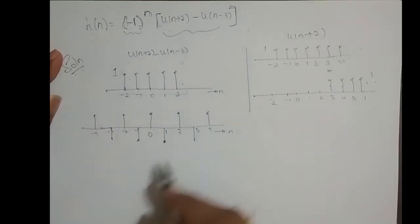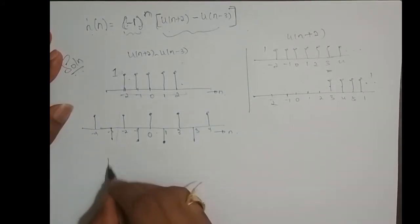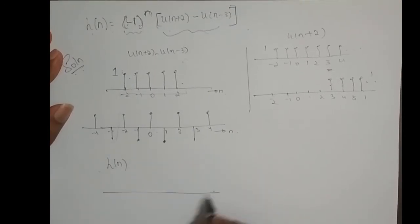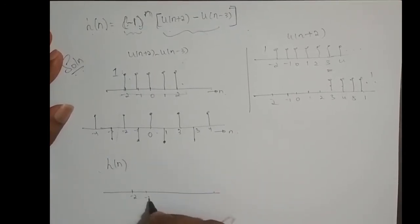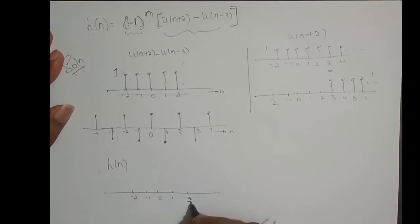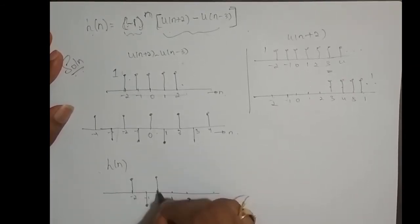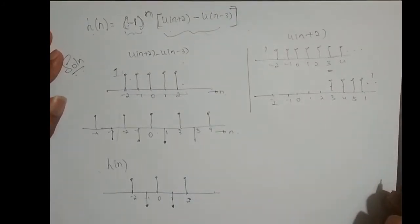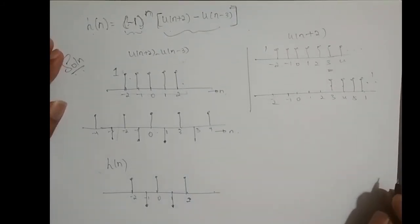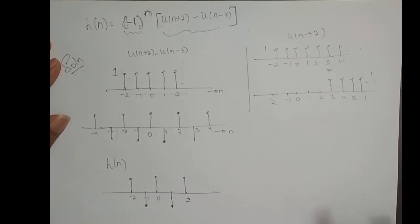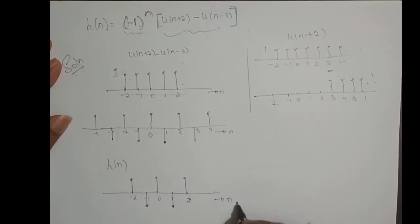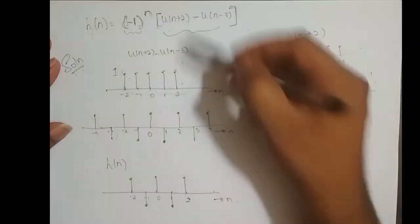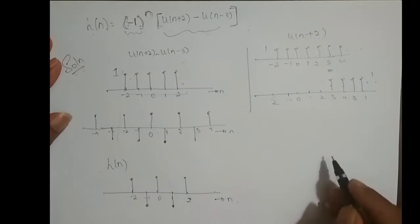So when the rectangular pulse is multiplied with this, I get this signal for n varying from minus 2 to 2. So h of n is: at minus 2 it is 1, minus 1 it is minus 1, at 0 it is 1, at 1 it is minus 1, at 2 it is 1. This is a sketch of the impulse response h of n.